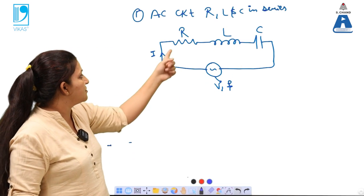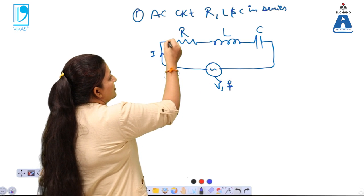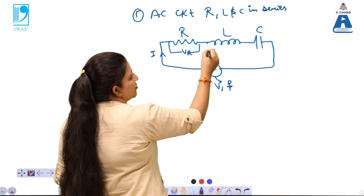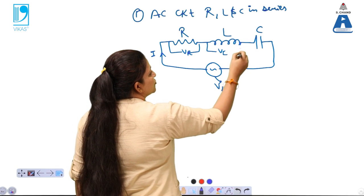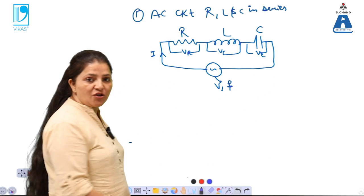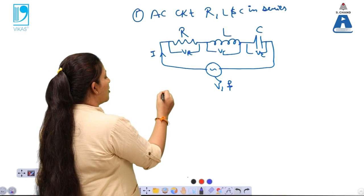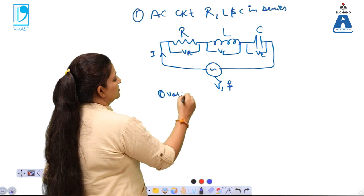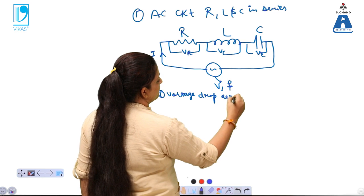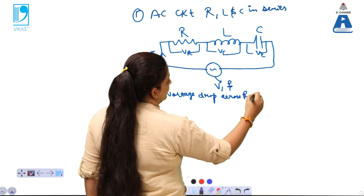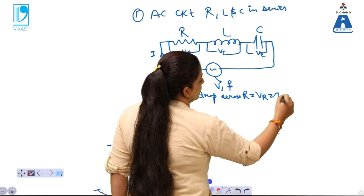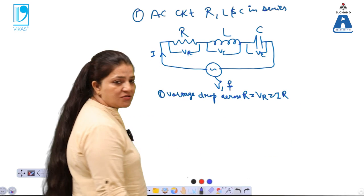The voltage drop is calculated across each element: the voltage drop across R equals VR, across L equals VL, and across C equals VC. We know that V equals IR, so VR equals I into R. This is the voltage drop across resistance.